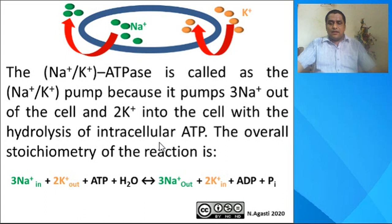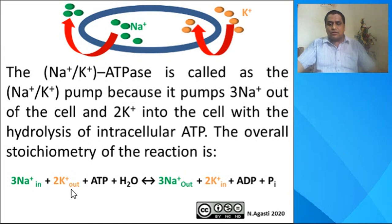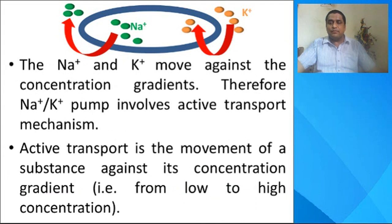For every hydrolysis of one ATP molecule, three sodium ions are pumped from inside to outside the cell and two potassium ions are pumped from outside to inside the cell. The overall stoichiometry of the reaction can be written as: three sodium ions from inside, two potassium ions from outside, and the energy coming from ATP hydrolysis — resulting in sodium ions being taken outside and potassium ions being taken inside the cell.